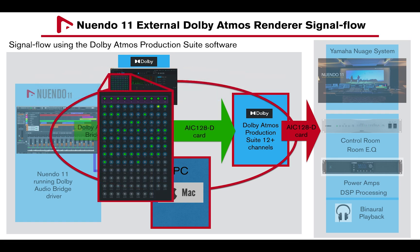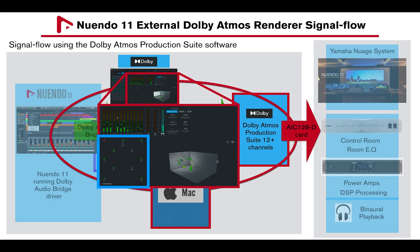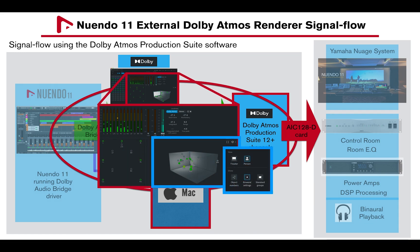Up to 128 channels can be used with the Dolby Atmos Renderer 3.5. Metering, including loudness and output limiter for speaker, headphone, and re-renderer, are also available. Speaker mute and an adjustable object virtual 3D room with preferences are available based on the project at hand.